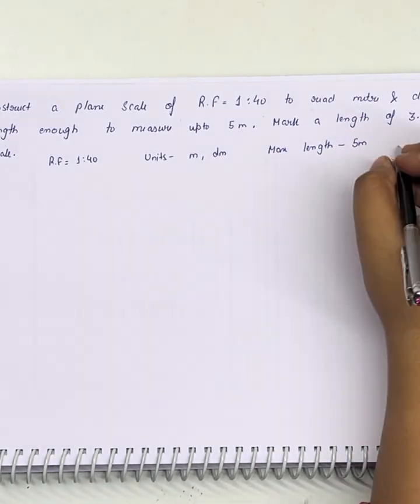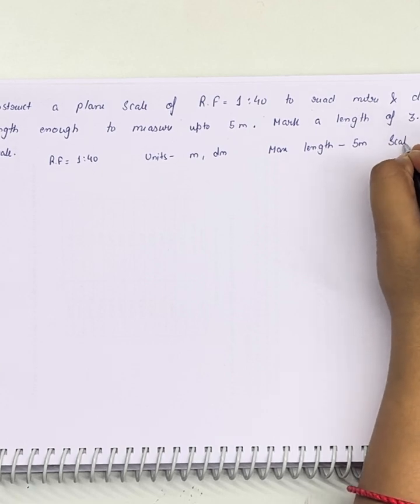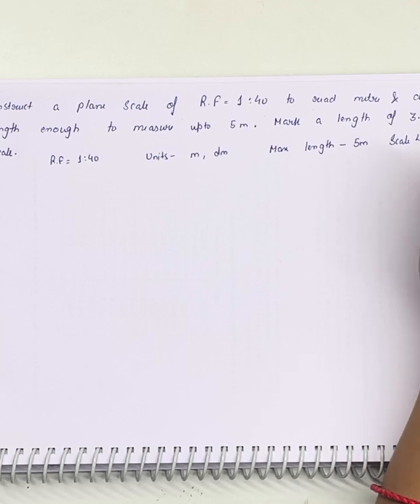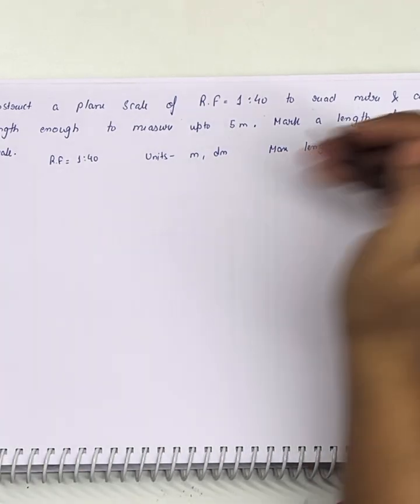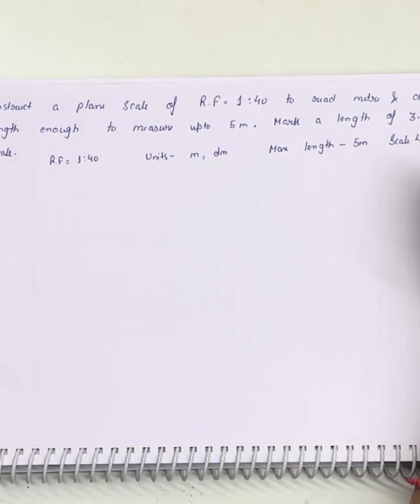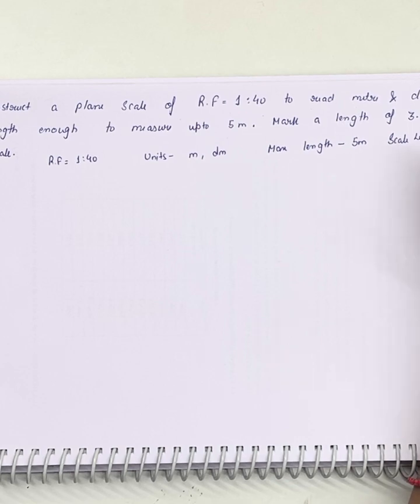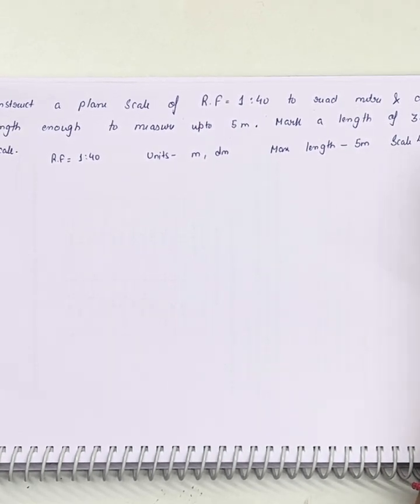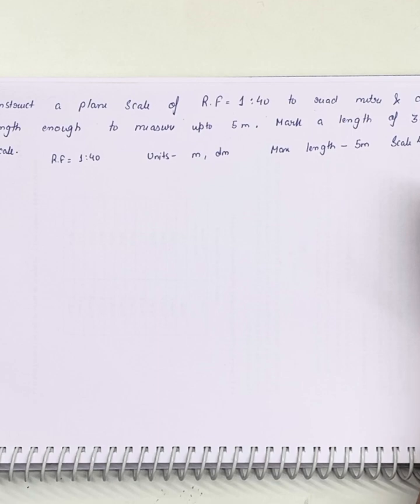Now we need to find the scale length. How will we find the scale length? RF into maximum length, this will be of this much meters. Converting it into centimeters, we will get 12.5 centimeters.